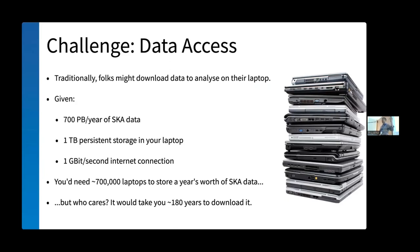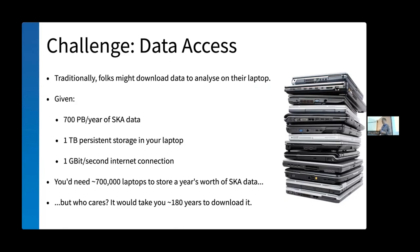You might say: usually we don't access a year's worth of raw data — we want derived data products like a catalog. Rubin Observatory's final data release will include 20 billion galaxies, 17 billion stars, 6 million solar system bodies, and 10 million transient alerts per night over 10 years — totaling about a 15 petabyte catalog. More tractable than 700 petabytes, but still something you can't stick in a regular database. The Rubin folks have their QSERV system: a sharded, distributed, massively parallelized database — very clever, but demonstrating you need specialist software just to work with catalogs, let alone pixel data.